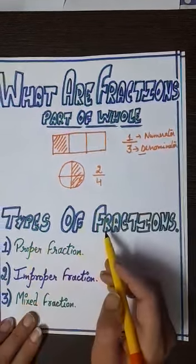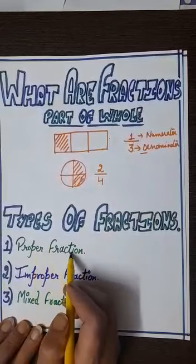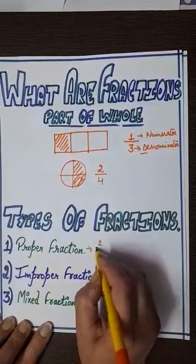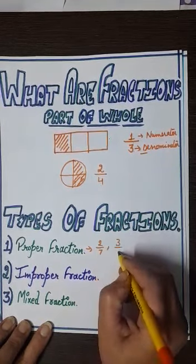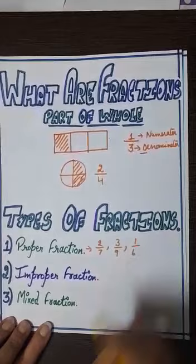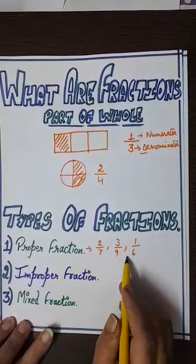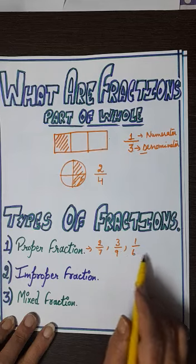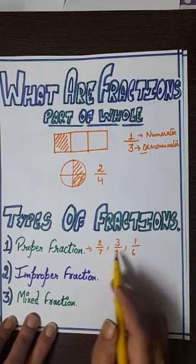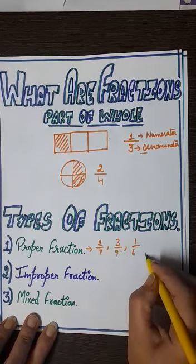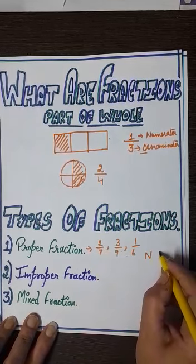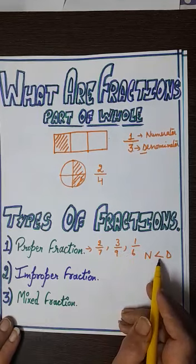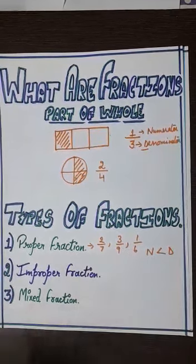Now I come to the types of fractions. First: proper fraction. Fractions of the type 2 by 7, 3 by 9, 1 by 6 are called proper fractions. In each of these fractions, you can see that the numerator is less than the denominator. Because the numerator is less than the denominator, they are called proper fractions.